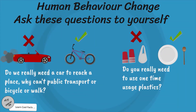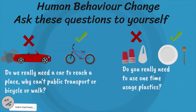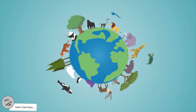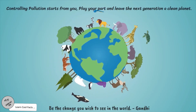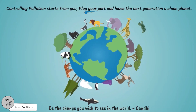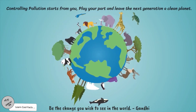Above all these control measures, the one main thing that needs to change is human behavior. Do we need a car always to reach a place? Why can't we use public transport, a bicycle, or walk? Do we really need to use plastics when things can be made of nature-friendly materials? As the great leader Gandhi mentioned, 'Be the change you wish to see.' Controlling pollution starts with you — play your part and leave the next generation a clean planet.